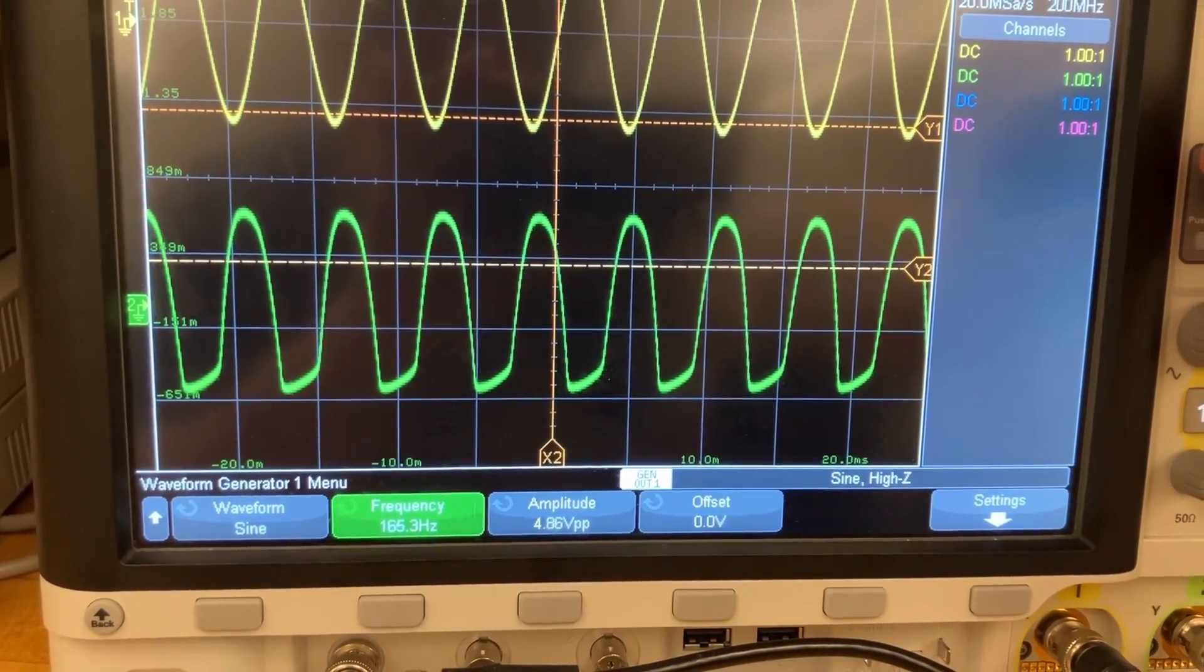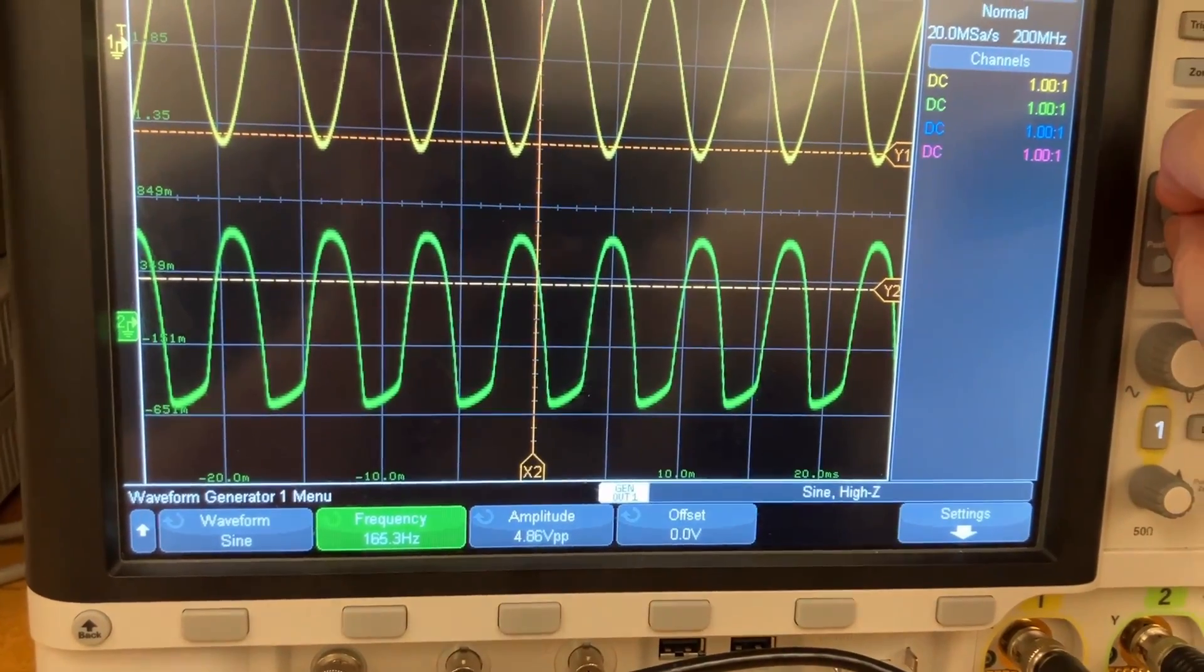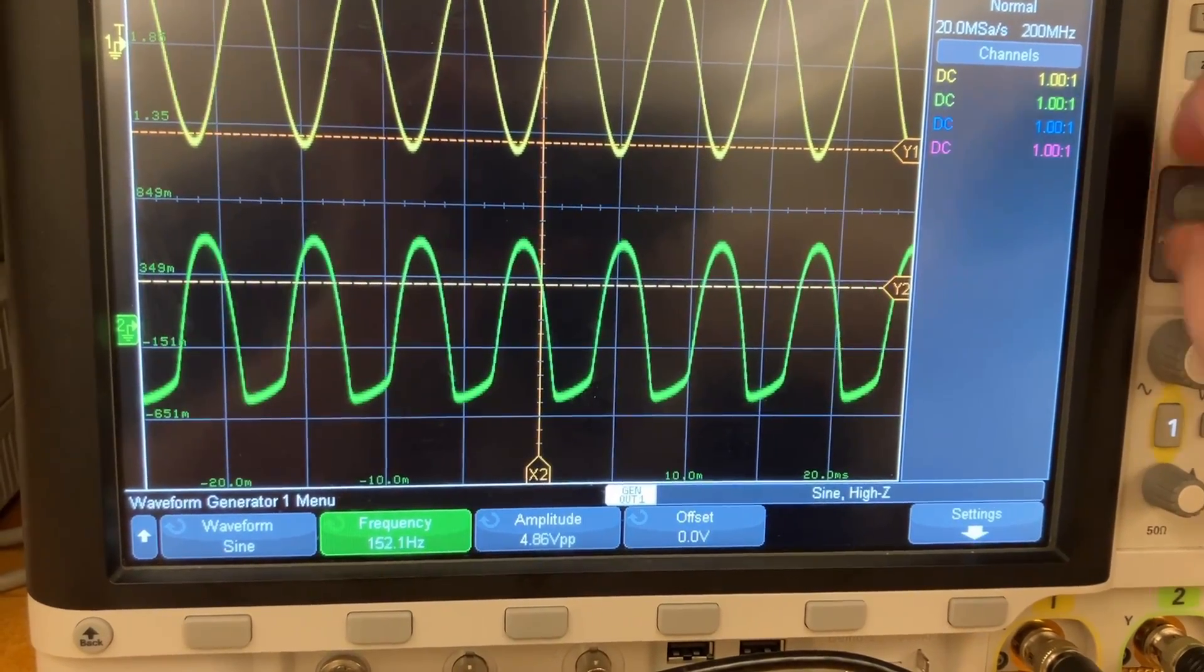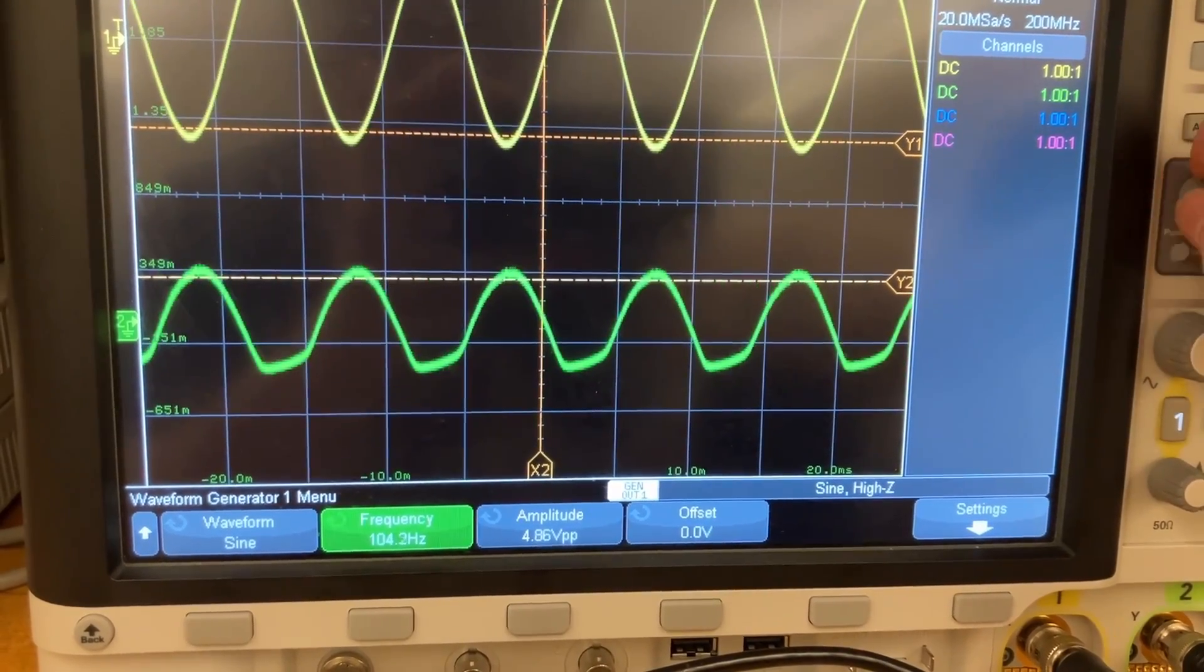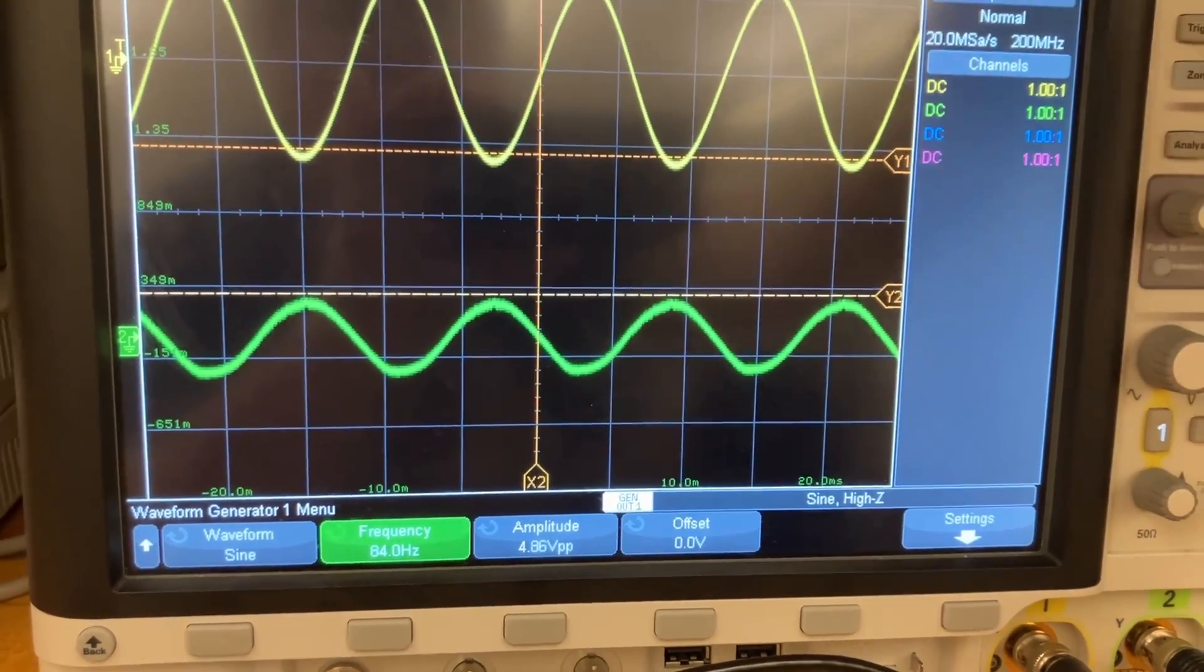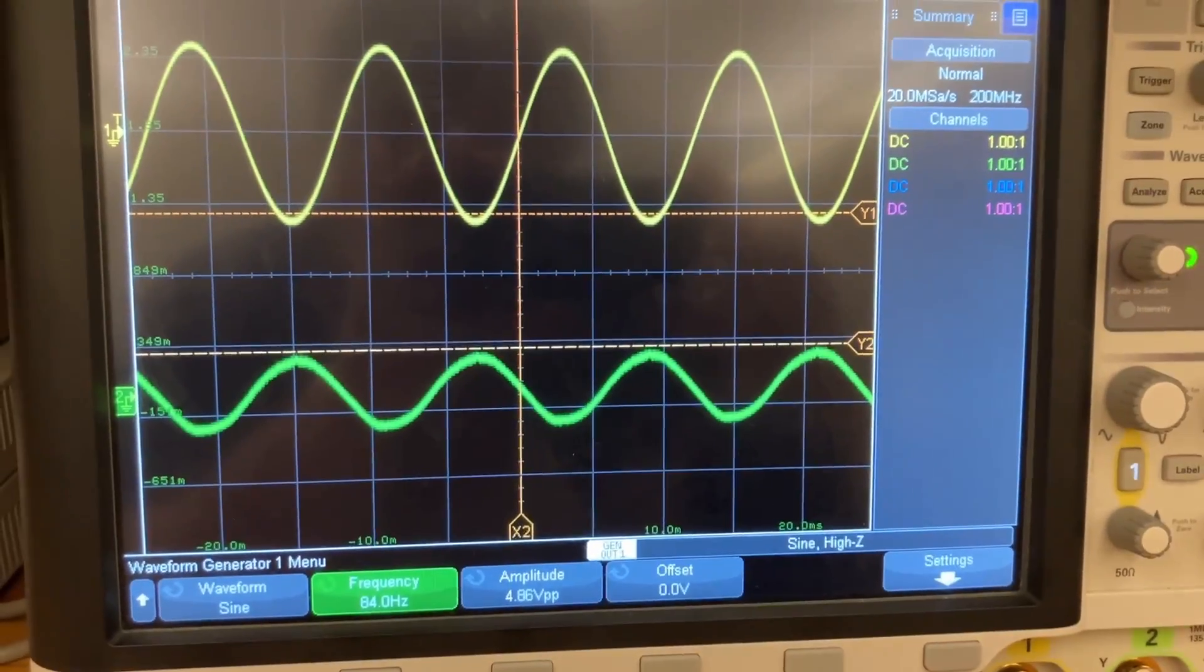And down here at 160, it's decreased in amplitude and looks a lot less distorted. And down here at, say, your low E-string 82, doesn't look distorted at all. Interesting.